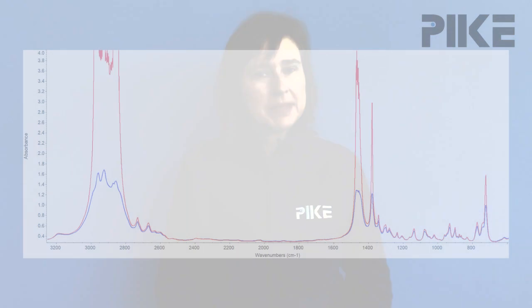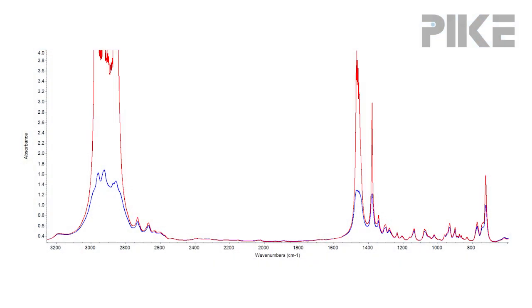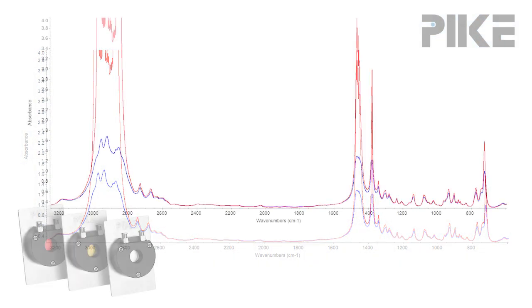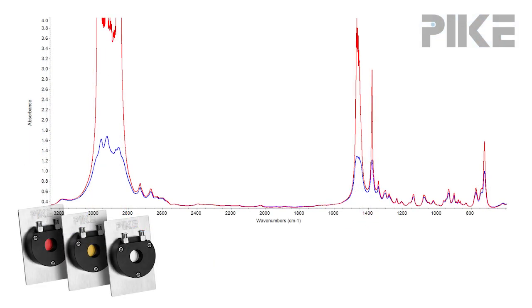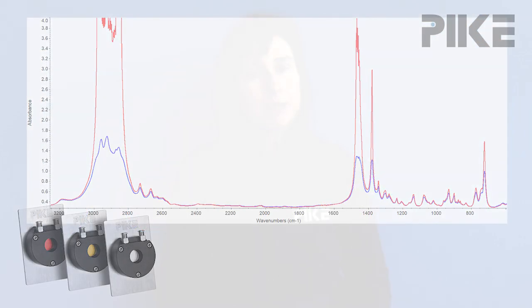Hello and welcome. Let's start right off by looking at some spectra I collected this morning. The sample was heptane. I used the Pike SmartSeal Liquid Transmission Cell with a path length of 0.1 millimeter and zinc selenide wedge windows.